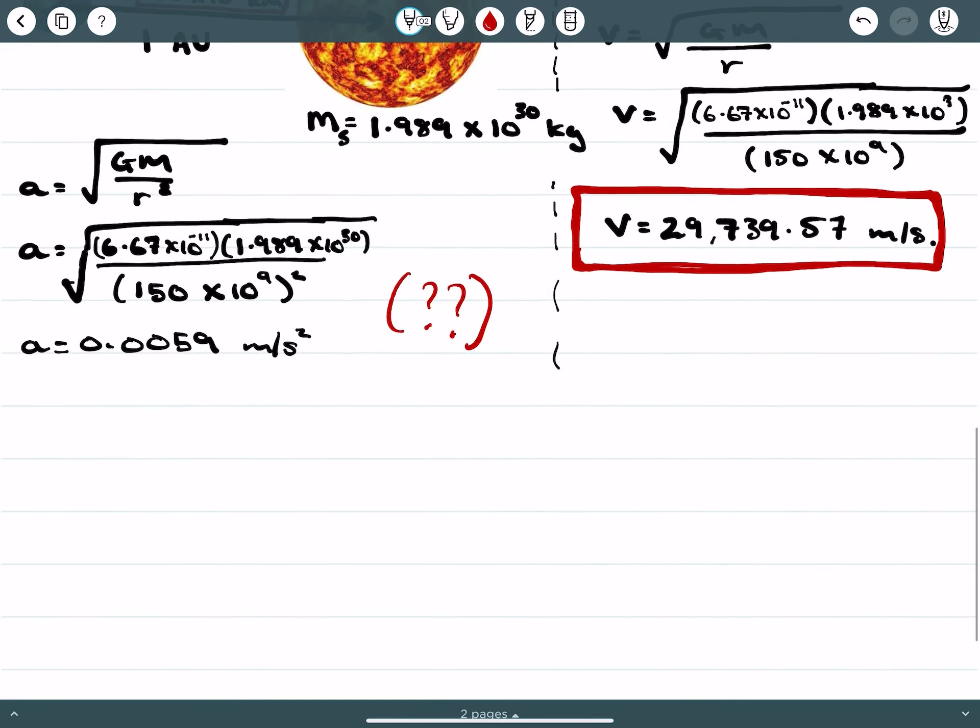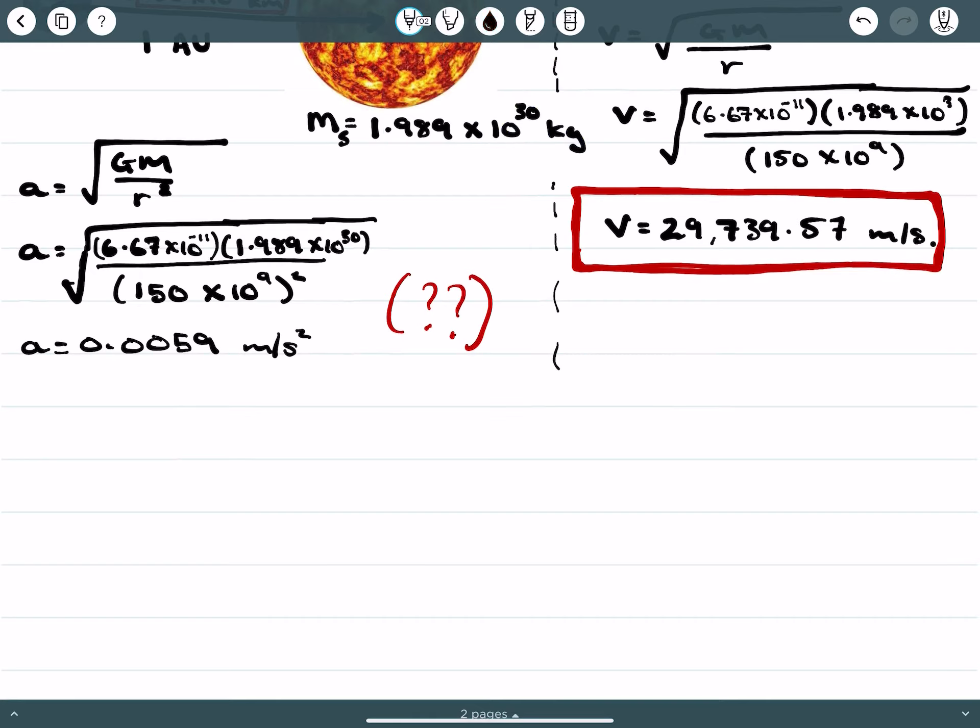So we have our velocity here and to find our period, what we're going to say is that's 2πr over the velocity. And this period is given by 2π times 150 times 10 to the 9, all over v, and we found v to be 29,739.57, and we get our period equaling...